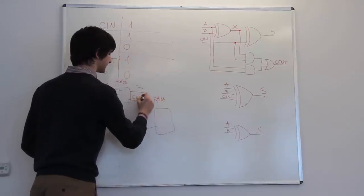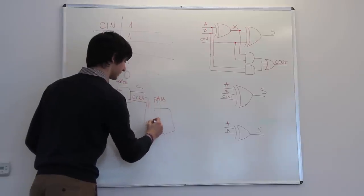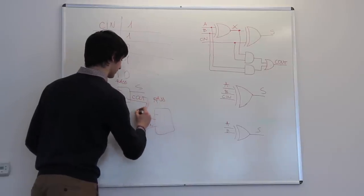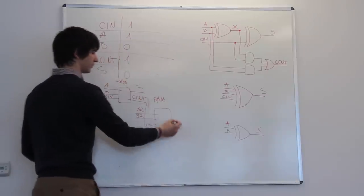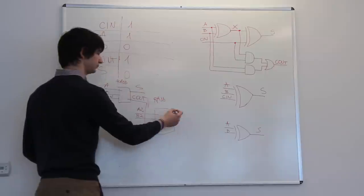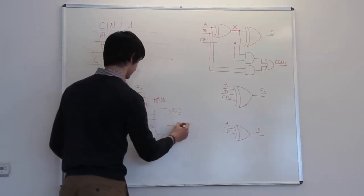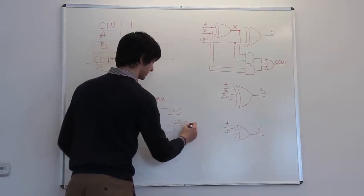So this is a cout, this is a cn, this is a a2, and b2. This is s2, this is cout 2.